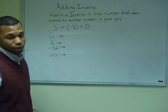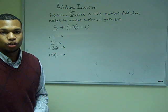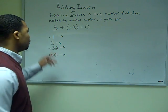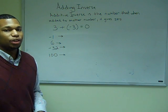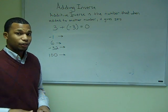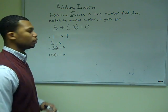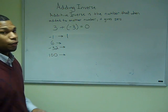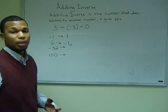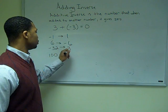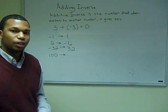Below I have a few numbers — let's discuss what the additive inverse would be for each. Negative 1 plus positive 1 equals zero, so the additive inverse of negative 1 is positive 1. With positive 6, the additive inverse is negative 6. With negative 32, it's positive 32. And with positive 100, it's negative 100.